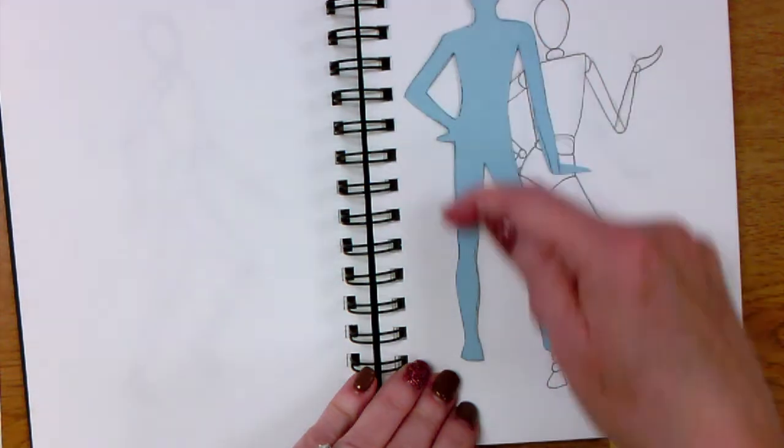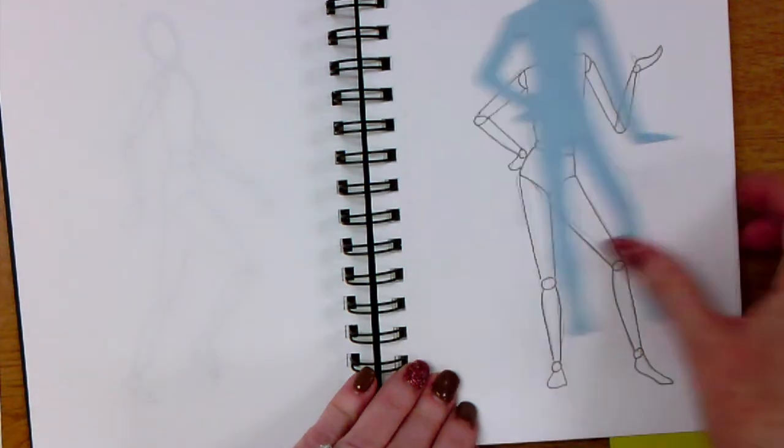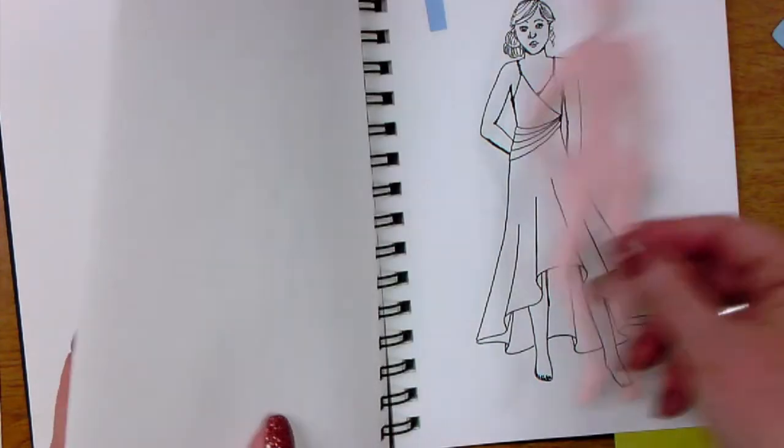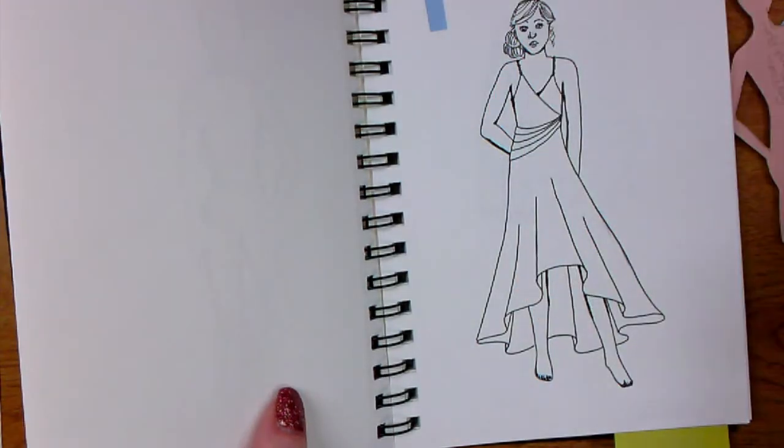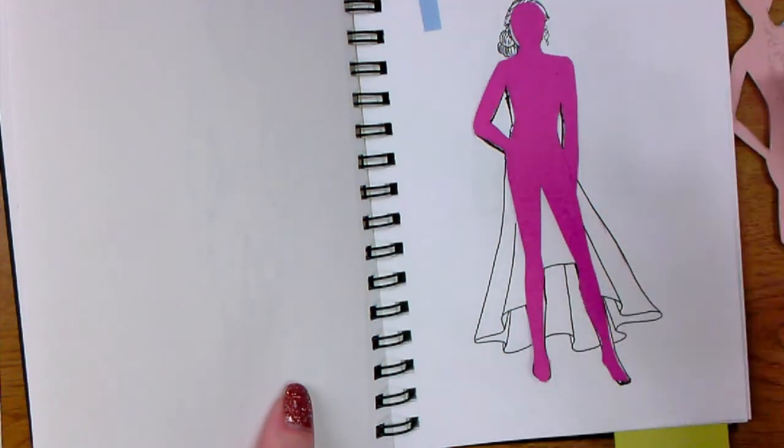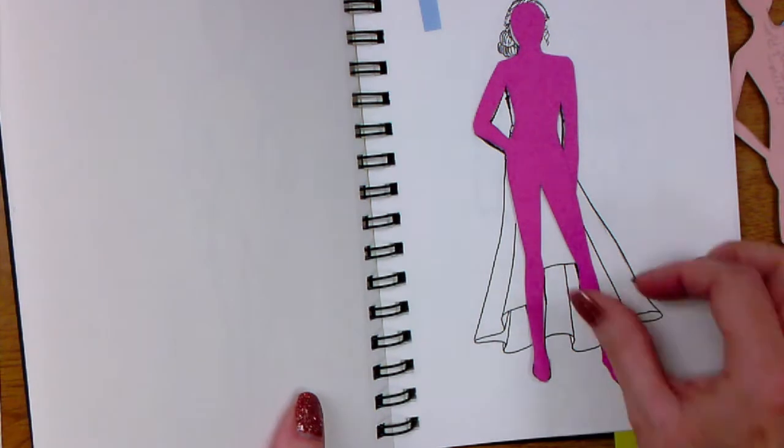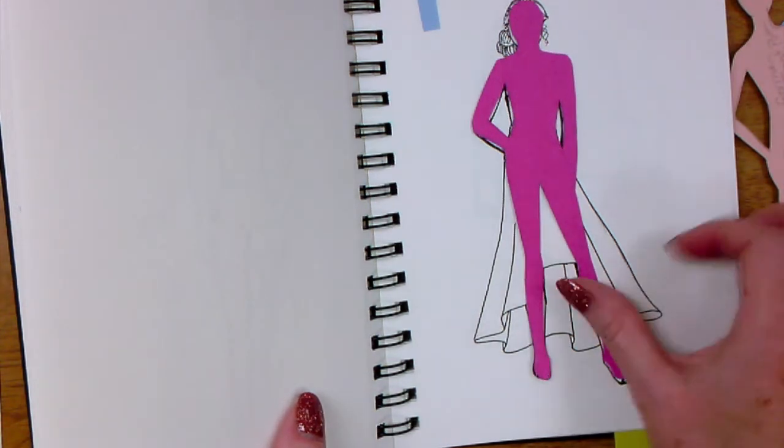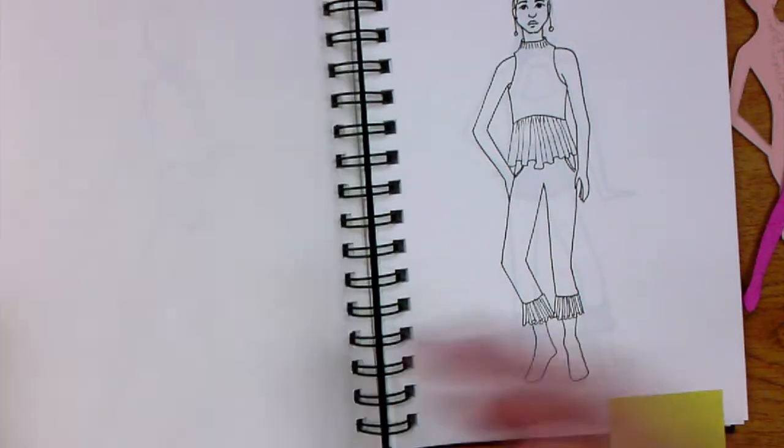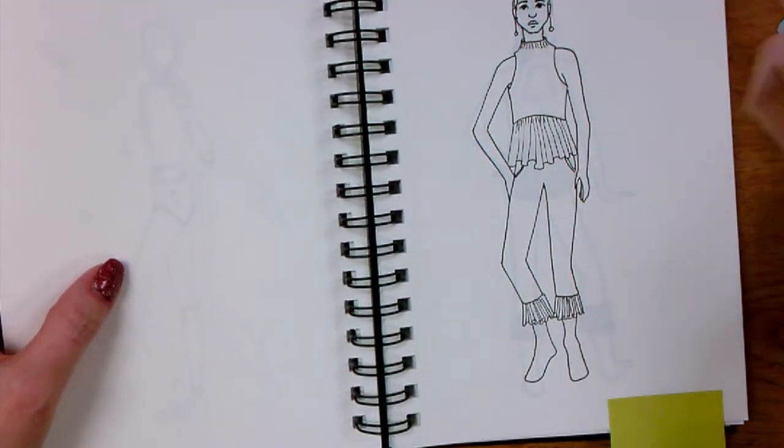From here, this would be the types of figures that you can then use to trace in your sketchbook and then actually create fashion for. So you can see that this is the figure that I originally traced and then developed an outfit idea from that.